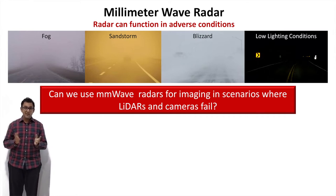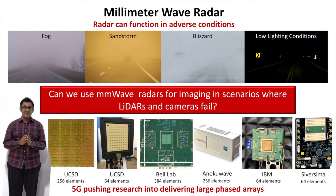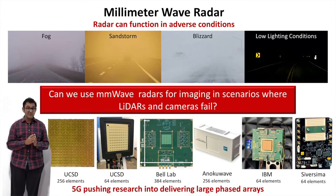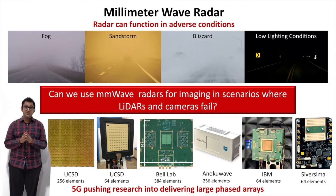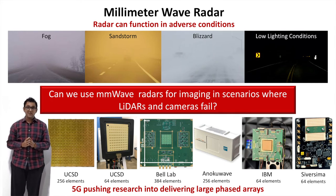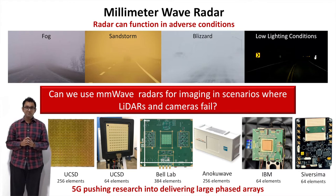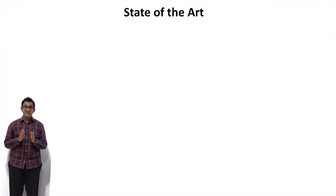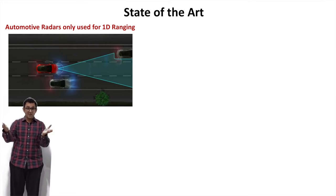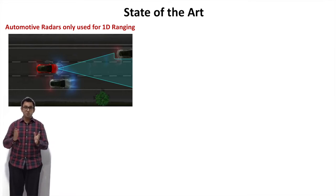Luckily, 5G has pushed phased array research a lot and now we have these massive phased arrays. With these phased arrays, you can actually get full 3D images of the environment, rather than just 1D range, which is what automotive radars do today. In fact, the self-driving cars on the market today like Waymo and Tesla are actually just using radars for 1D ranging — detecting how far away cars are and what speed they're moving at.